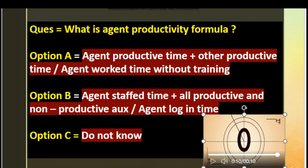The correct answer is Option A: agent productive time plus other productive time — which includes billable time approved by the client — divided by agent work time without training, coaching, or any other non-productive hours that are not billable. I hope you liked the video. Please subscribe and share for more videos.